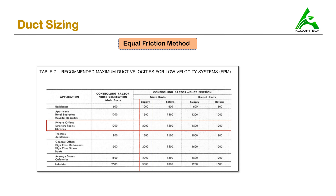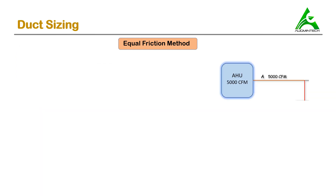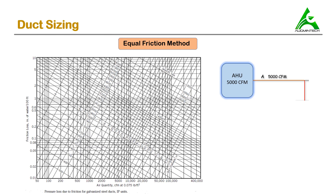Carrier suggests the maximum allowable velocity of flowing air in the duct is 2000 FPM. The next step is to determine the maximum velocity of air in our sample project. It's important to understand that the maximum velocity occurs in the first section, section A, because as air flows further, its velocity decreases. So we'll determine the velocity in section A as the maximum velocity for our project.